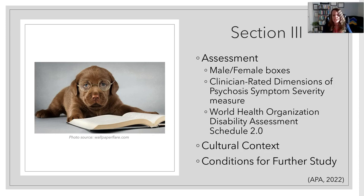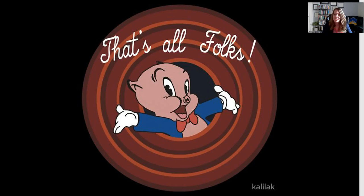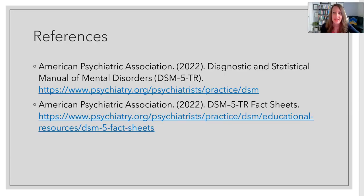In the last section — conditions for further study — what used to be persistent complex bereavement disorder has now moved to the trauma and stressor-related section as an official diagnosis now deemed prolonged grief disorder. Those are the changes to the DSM-5 TR. I hope that you found this summary to be a helpful review. Here are some references and opportunities for further study, and good luck.